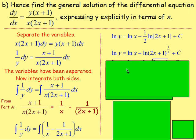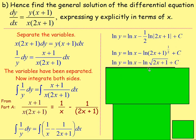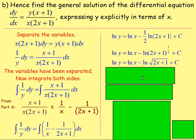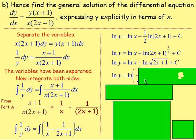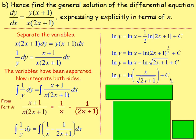Whenever you have something in front of ln, move that up to become a power. So we'd have ln y equals ln x take away ln(2x plus 1) to the power of a half, plus c. The power of a half just means square root, so rewriting that: ln y equals ln x minus ln of the square root of (2x plus 1) plus c. Applying your log rules, that becomes ln y equals ln of x over the square root of (2x plus 1), plus c.